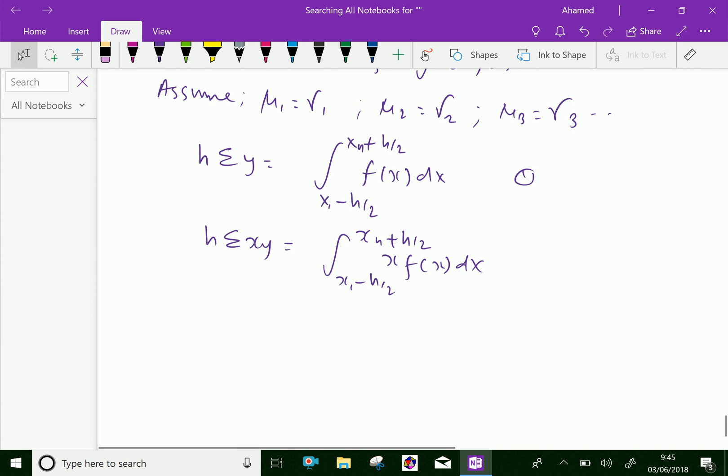The third equation is: h∑x²y = ∫[x₁ - h/2 to xₙ + h/2] x²f(x)dx.